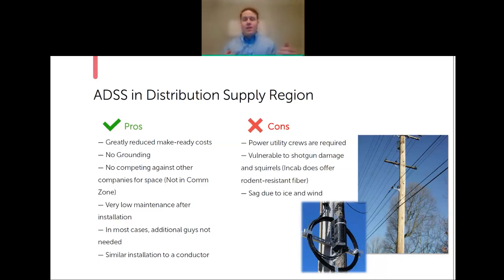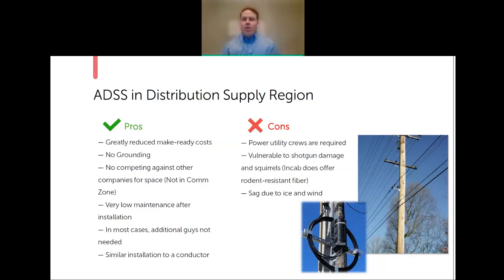Standard ADSS design is not an armored cable, so it is vulnerable to shotgun damage and to squirrels, which absolutely love chewing on fiber optic cable. However, there are other cable designs that can help make a cable rodent-resistant and provide additional protection beyond what the standard ADSS design offers.